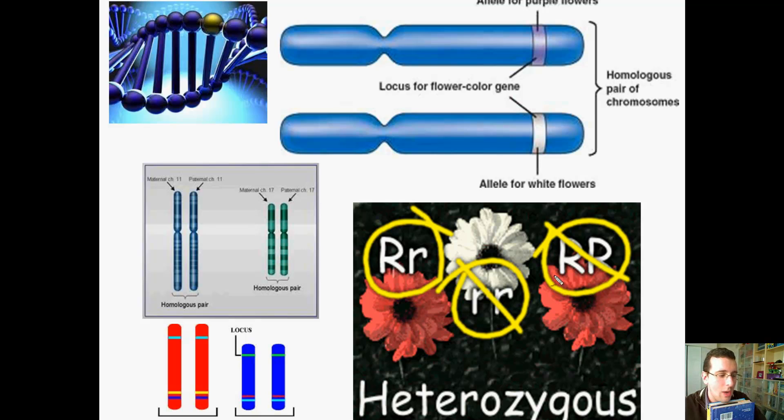Now, notice that in the bottom here, you actually have the different versions of what you could have. You can have two flowers that say the same thing, and you see that both of them here are saying this, big R, big R, or little r, little r. Or you can have a mixture where one gene says one thing, one gene says another. Now, why is it two pairs? Think about it. Because we're diploid organisms. Remember that? We have one copy from mom, one copy from dad. We're diploid.